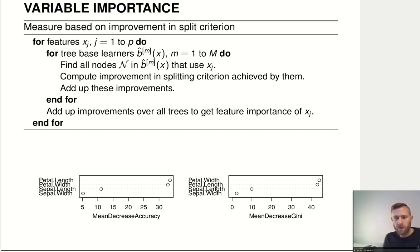Even simpler is the implementation in this first kind of variable importance. We basically just look at how much of an improvement in the split criterion these nodes that are using that specific feature are adding. So for all the features in our training data, in our dataset, we do the following. We go to every tree-based learner in the ensemble, and in every tree-based learner, we find all the nodes that use that specific feature XJ.